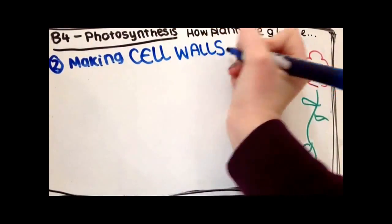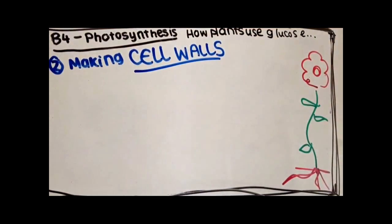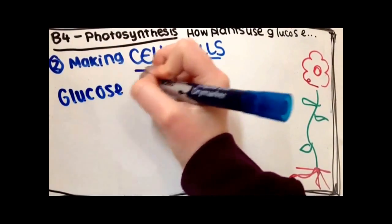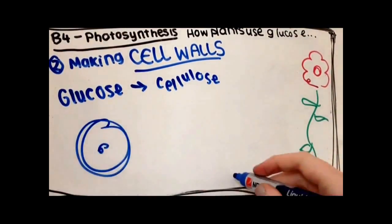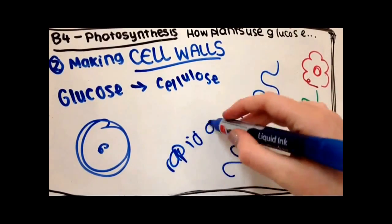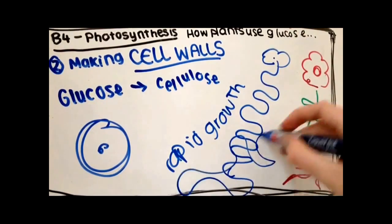Another thing the glucose is used for is making cell walls. Glucose is converted into cellulose for making cell walls and this is especially in a rapidly growing plant.